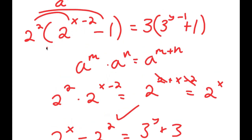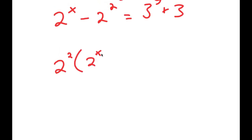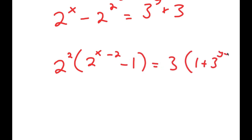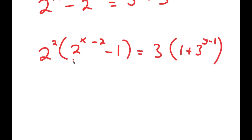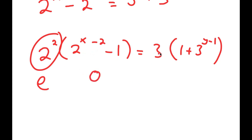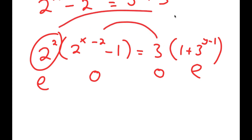Going back and rewriting: I have 2 squared times the quantity 2 to the power of x minus 2 minus 1, equal to 3 times the quantity 1 plus 3 to the power of y minus 1. Notice that 2 squared equals 4, which is even, and 2 to the power of x minus 2 minus 1 is odd (even minus 1). So we have an even number times an odd number equal to 3 (odd) times an even number.